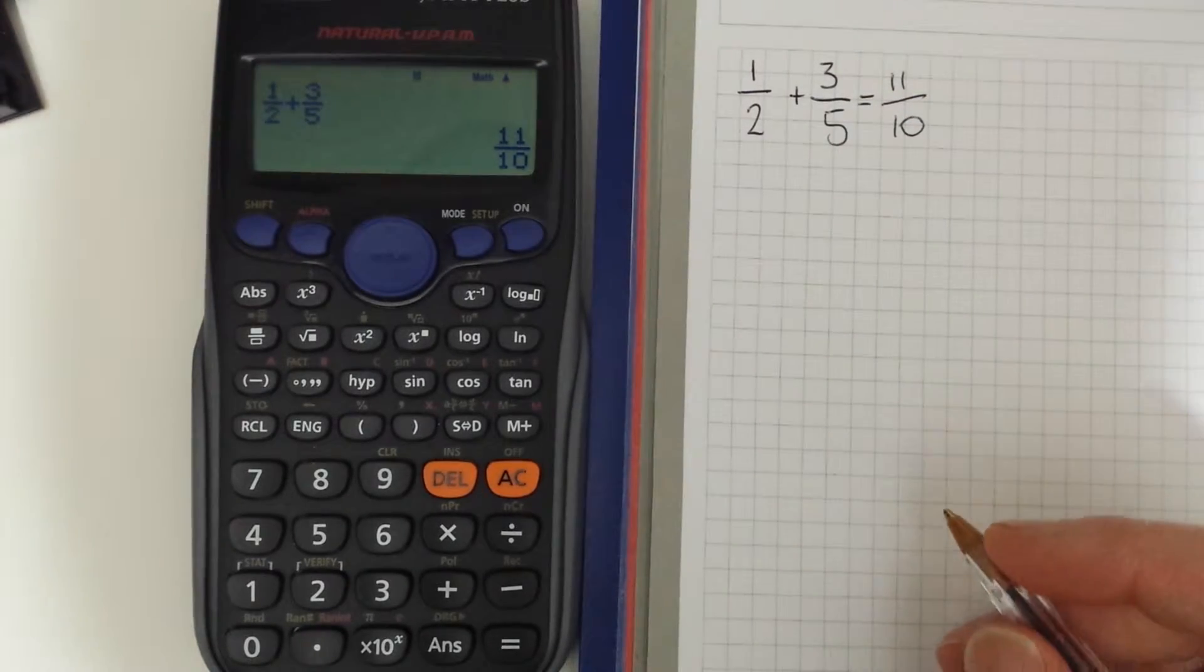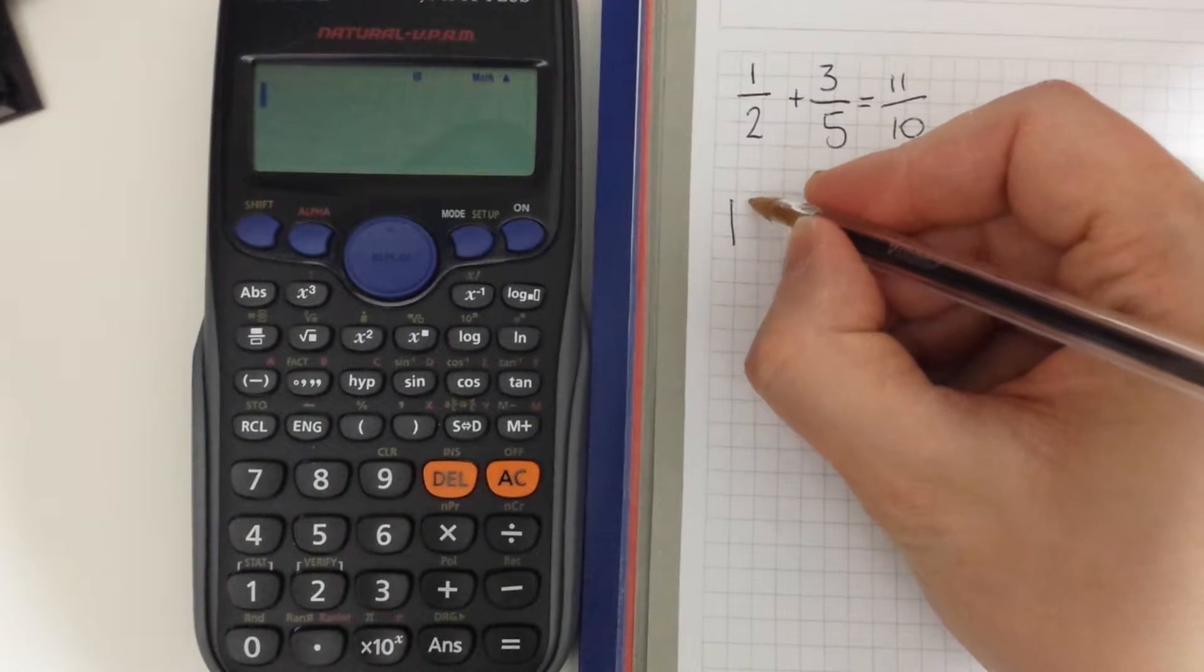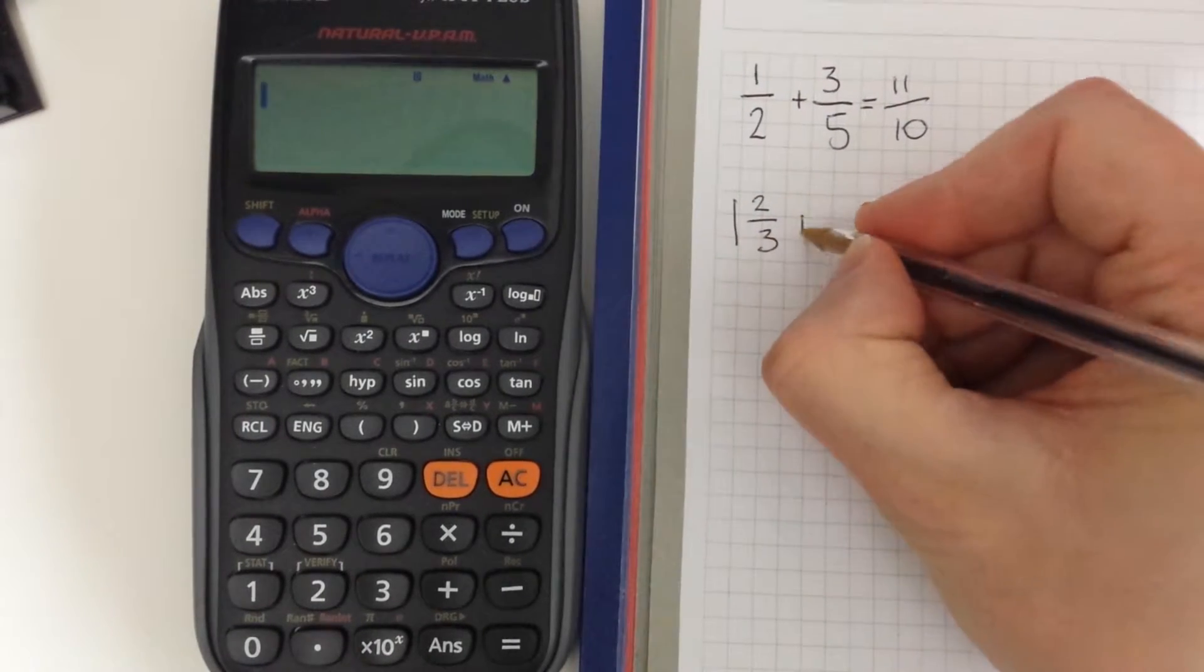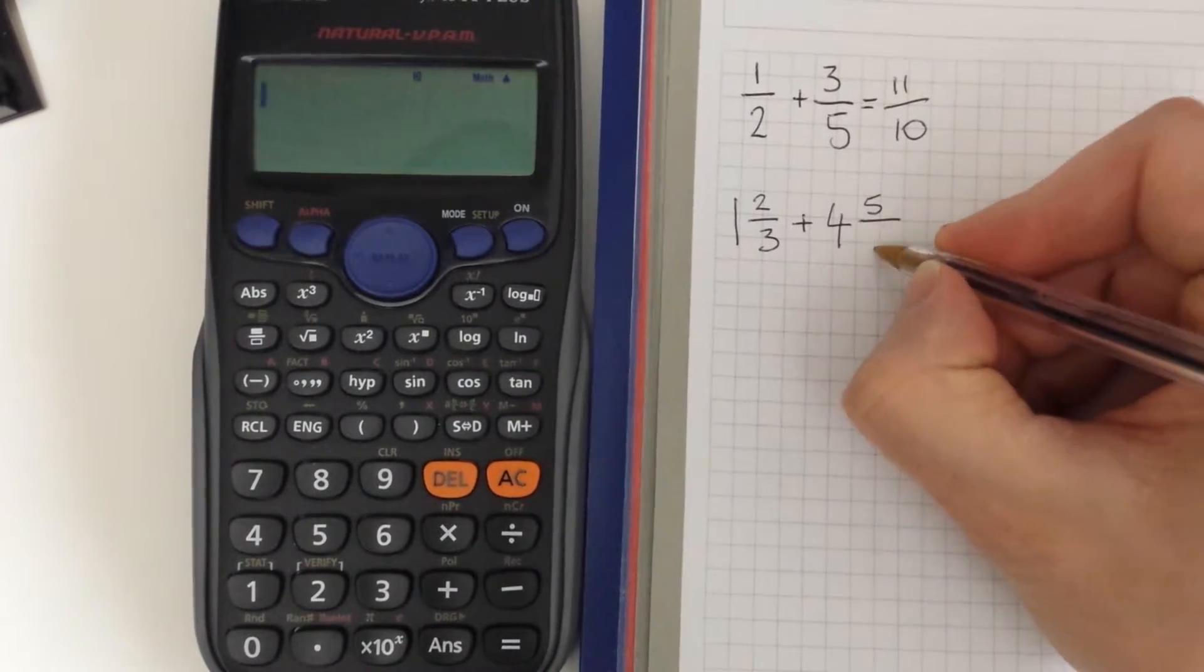So let's have a go at a mixed number fraction. So we'll do 1 and 2 thirds plus 4 and 5 eighths.